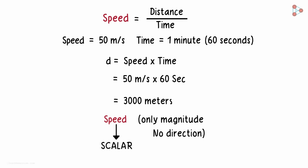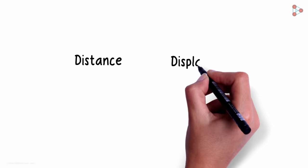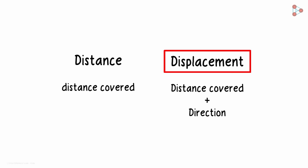Scalar quantities have only magnitude and do not specify direction. Do you remember the difference between distance and displacement? Distance just tells us the distance covered, but displacement is distance with direction.